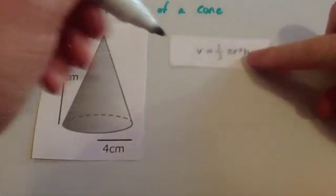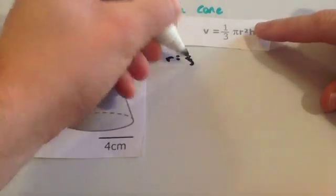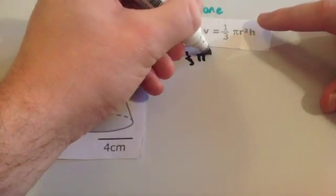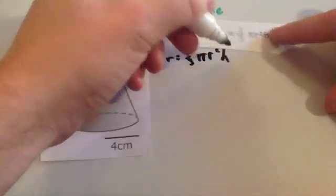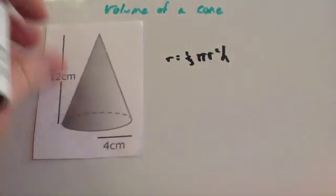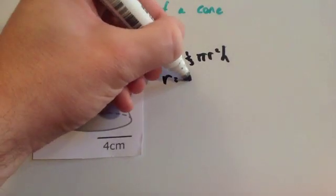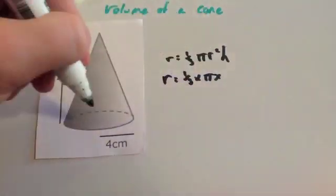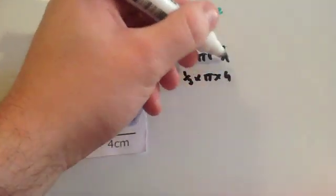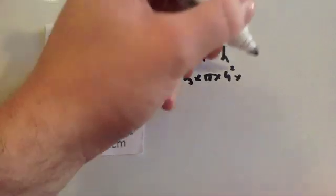So, we've got the formula, volume equals 1 third pi r squared h. What we're going to do is substitute these values in. So, the volume equals 1 third times pi times the radius, which equals 4 squared, times the height, which is 12.